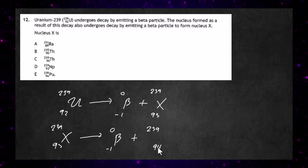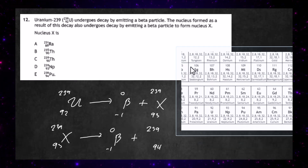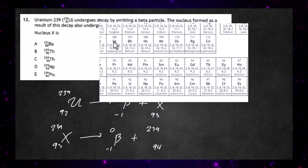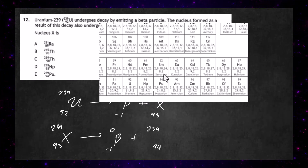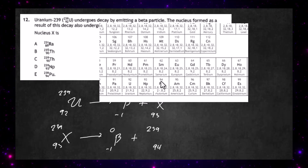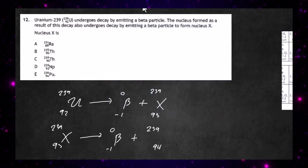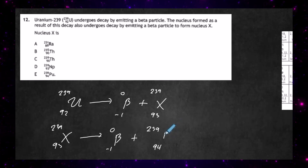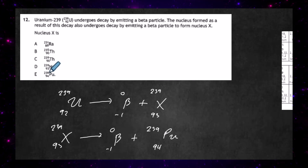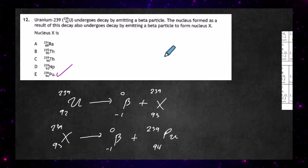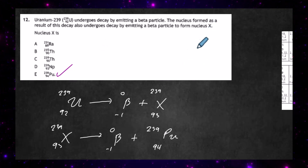We need to identify the nucleus with atomic number 94. Looking up the periodic table on the paper, atomic number 94 is plutonium (Pu). So nucleus X is Pu-239 with atomic number 94. The answer to question 12 is E: ²³⁹₉₄Pu.